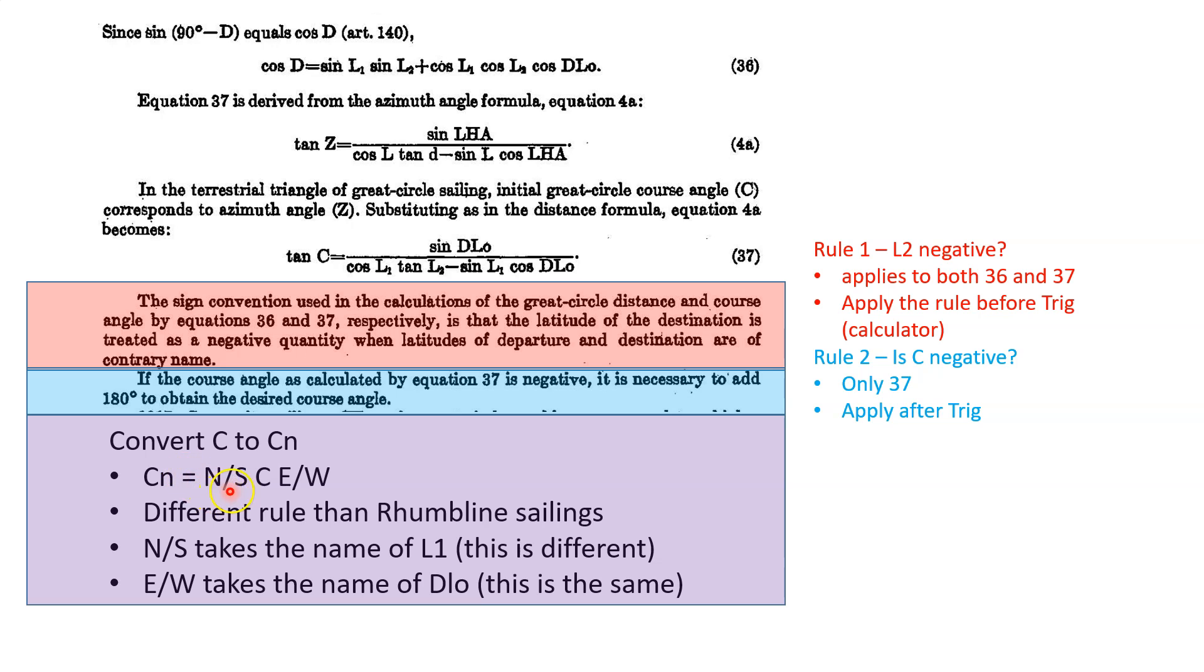So here's the story. For great circle sailing, when you convert C to CN, the prefix is not going to be whether I went north or south. The prefix is going to be whatever was the name of L1. What the hell does that mean? Well, what that means is that if I was in the northern hemisphere, if I started in the northern hemisphere, the name of L1 would be north. And then I would circle, I would use north. And if I started in the southern hemisphere, then it would be south. And so those are the rules that you're going to have to apply, all right? And I hope that video was helpful to you.